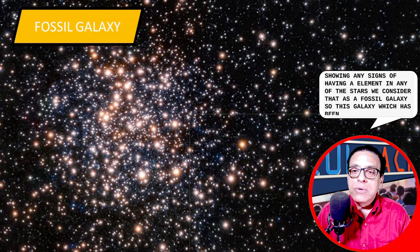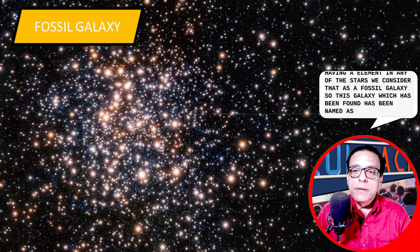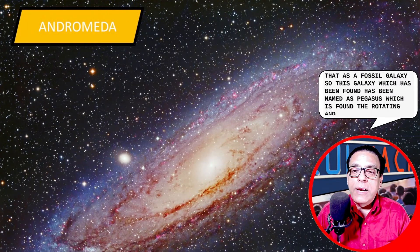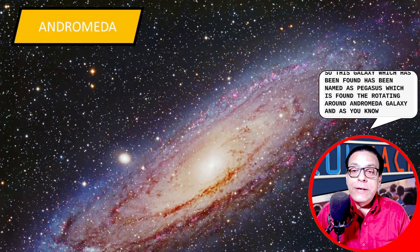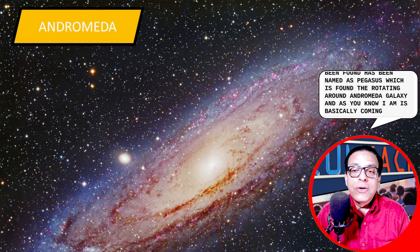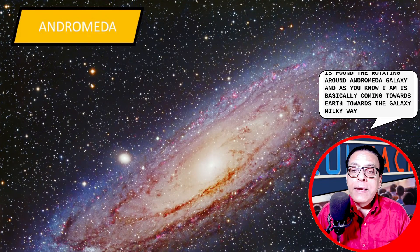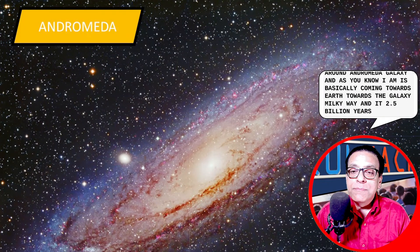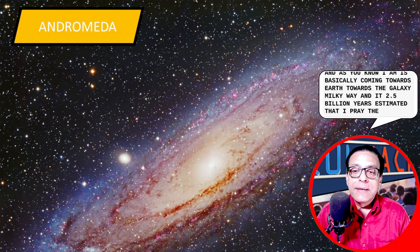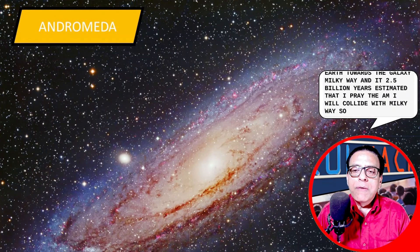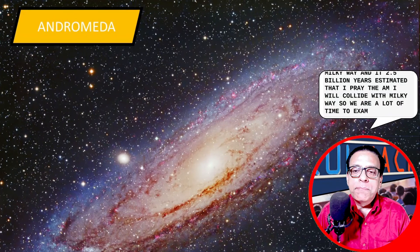So this galaxy which has been found has been named as Pegasus, which is found rotating around Andromeda galaxy. And as you know, Andromeda is basically coming towards Earth, towards the galaxy Milky Way. And in 2.5 billion years estimated timeframe, the Andromeda will collide with Milky Way. So we have a lot of time to examine Pegasus.